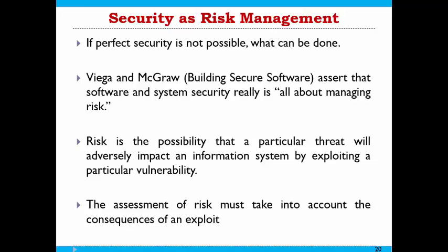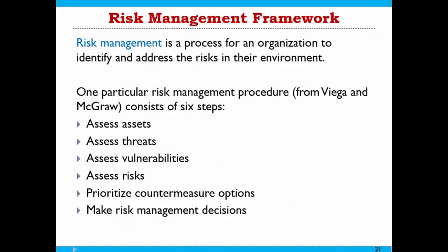Whenever you are assessing risk, you consider two things: the probability of the risk and the level of threat or the amount of damage it can cause. Risk management from the Yagen and McGrath perspective involves six steps. First, assess what assets you have — the valuable items in your system, including hardware, software, people, and the network. Second, assess what different threats can occur to the hardware, software, system, or people. Third, check if there are already any weaknesses or loopholes present. You may overlook something, but it is better to make a risk assessment report.